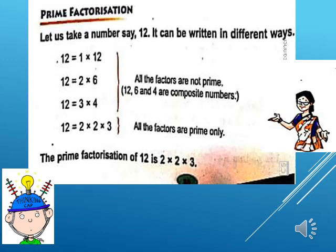All these numbers are nothing but the factors of 12. But all factors are not prime numbers. Some are composite numbers and some are prime numbers. We have to take only prime factors. Here at the last, 12 equals 2 into 2 into 3. If you will see here, all the numbers are prime numbers. Therefore, the prime factorization of 12 equals 2 into 2 into 3.